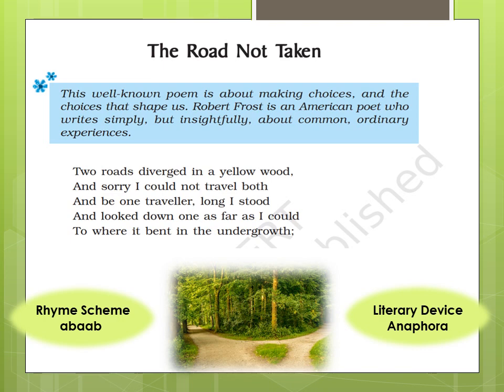The rhyme scheme in this first stanza is ABAAB. The rhyme scheme is shown by the last word of each line: 'would', 'both', 'stood', 'could', and 'growth'. These are the last words of each line that decide the rhyming scheme. So the rhyming scheme of this stanza is ABAAB.